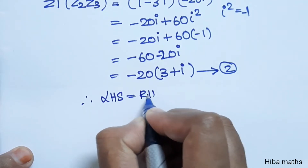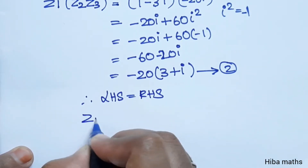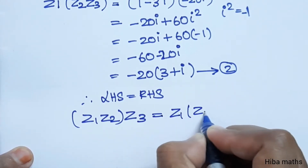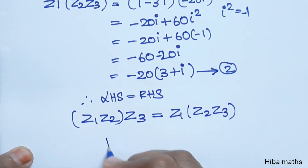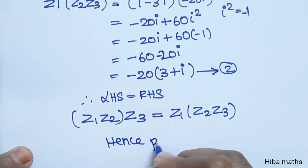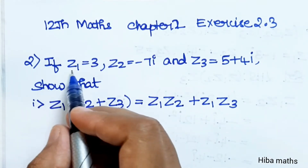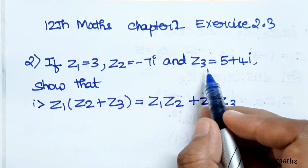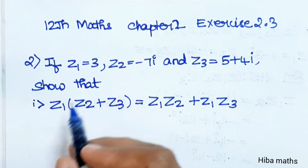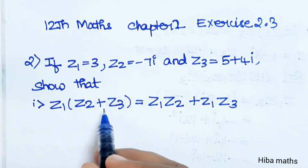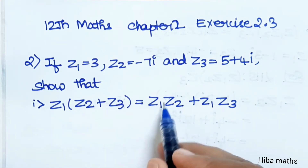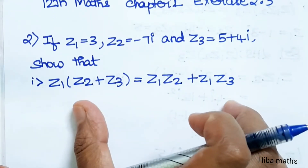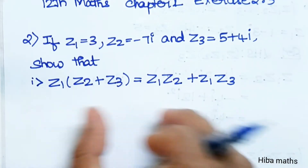First result equals second result. Therefore LHS equals RHS, and z1 into z2 into z3 is equal to z1 into z2 into z3. Hence proved. Now second question: if z1 equals 3, z2 equals minus 7i, and z3 equals 5 plus 4i, show that z1 into z2 plus z3 equals z1 into z2 plus z1 into z3.